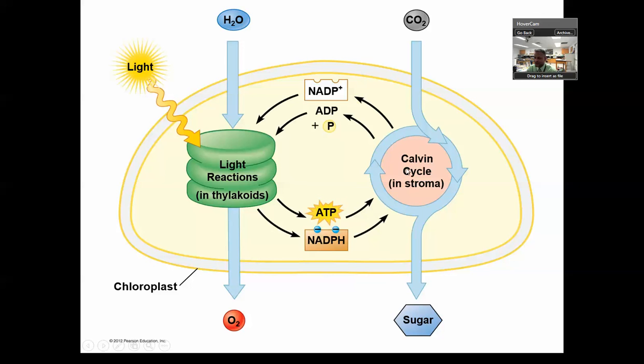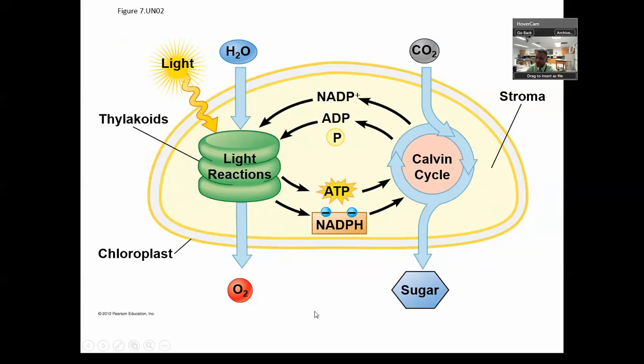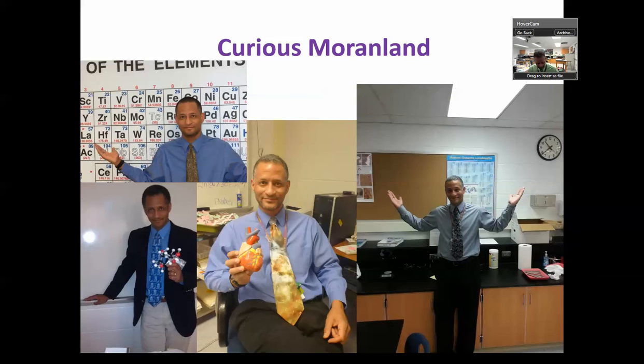So ATP comes in, is used here. Used energy is called ADP. It goes back to the light reaction. NADPH drops this hydrogen off, and it goes back to the light reaction. And again, this is the thylakoid. This would be the stroma. So see everything's labeled. That's pretty much a wrap-up with the pigments and the cycles brought to you by Curious Marine Land.